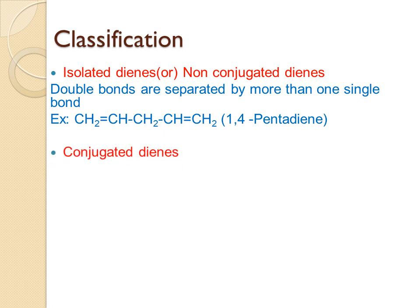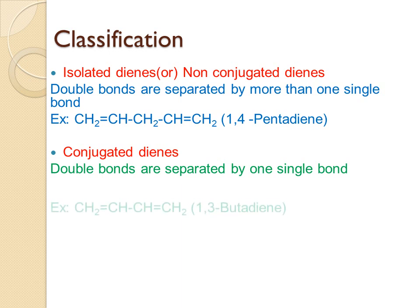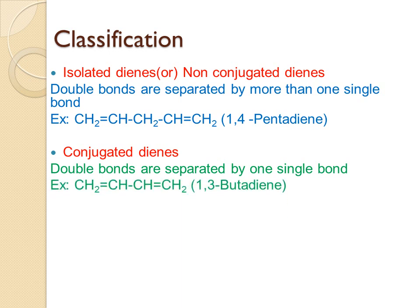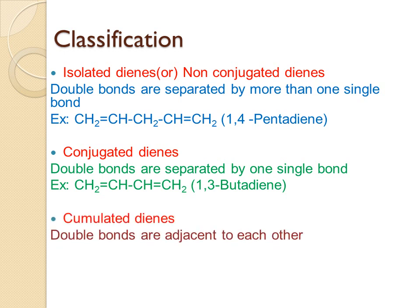The next classification is conjugated dienes. If the double bonds are separated by only one single bond, it is called a conjugated diene. For example, 1,3-butadiene: CH2=CH-CH=CH2. The double bond is at carbon 1 and carbon 3, and in between these two double bonds there is only one single bond, so it is a conjugated diene.